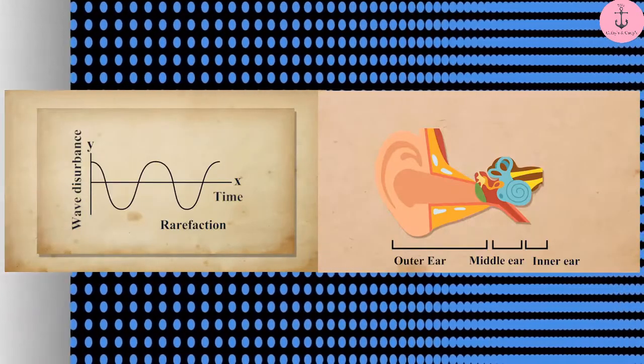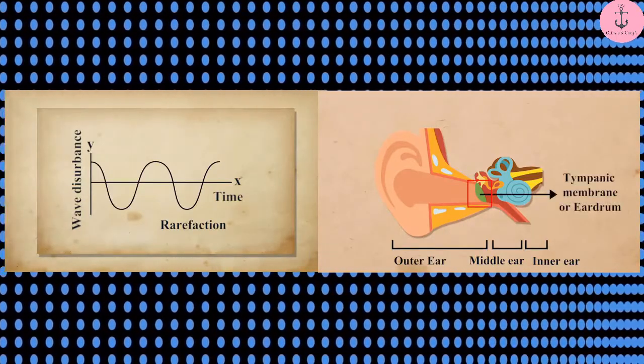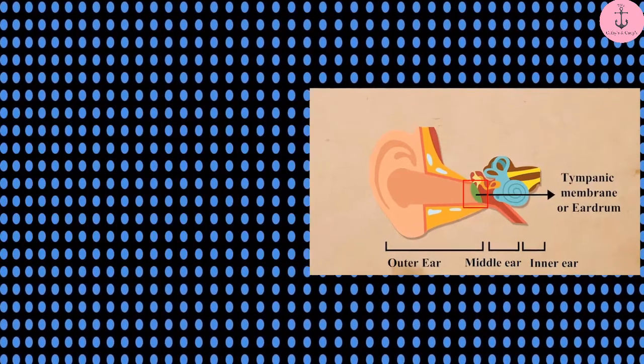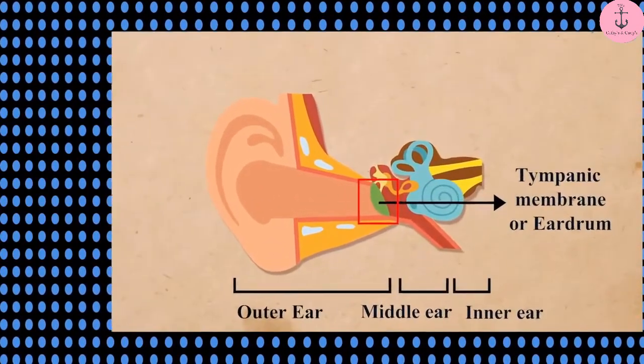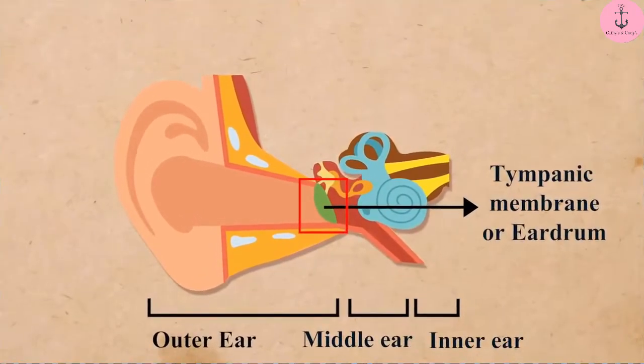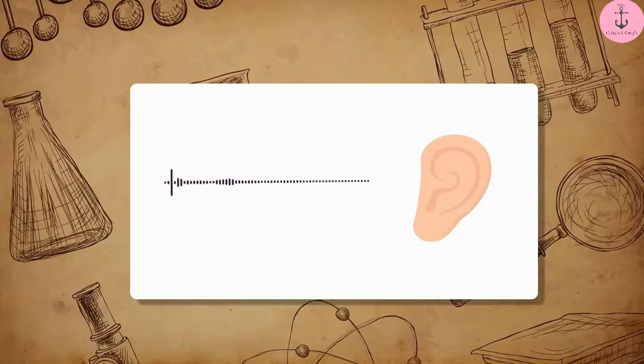Similarly, when a rarefaction of the medium reaches the ear drum, it forces the ear drum outward. In this way, vibrations are produced by the sound in the ear drum.